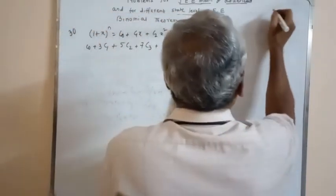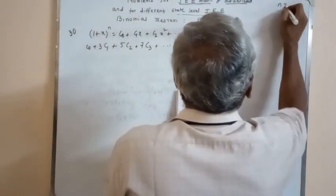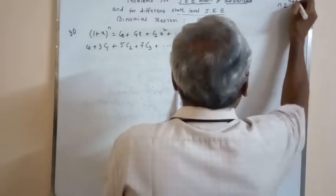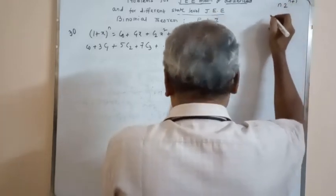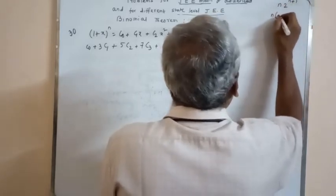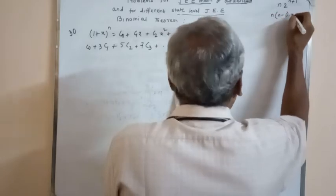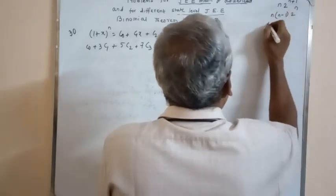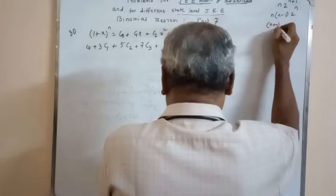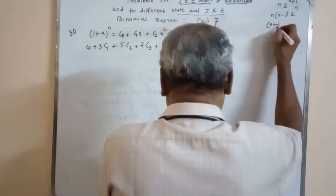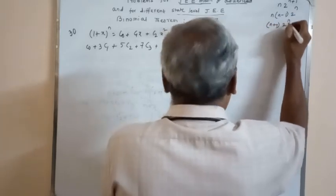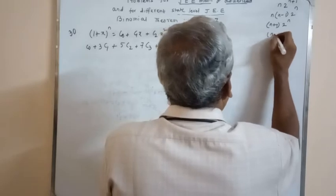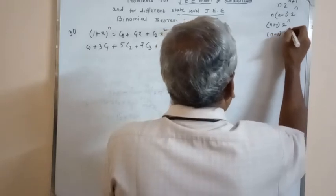Options: n·2^(n+1); n(n-1)·2^n; (n+1)·2^n; and (n-1)·2^n.